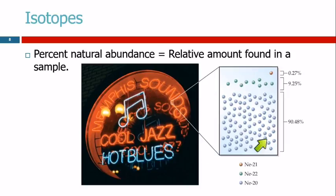So if we look at the neon in this sign, we see that 90.48% of those atoms are neon-20. And only 9.25% are neon-22, and only 0.27% are neon-21.